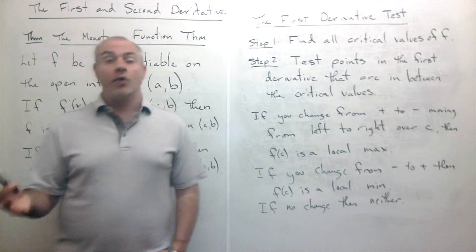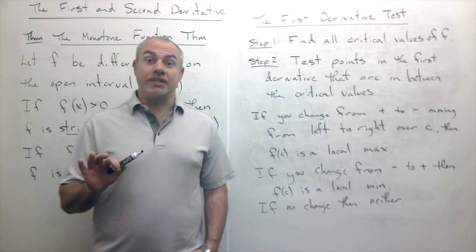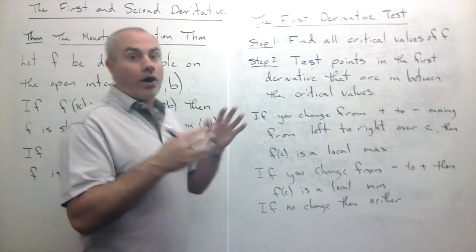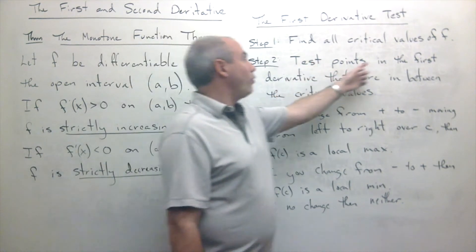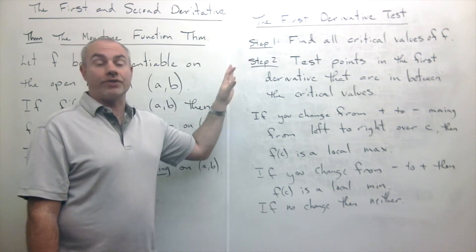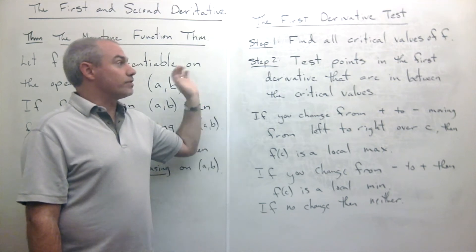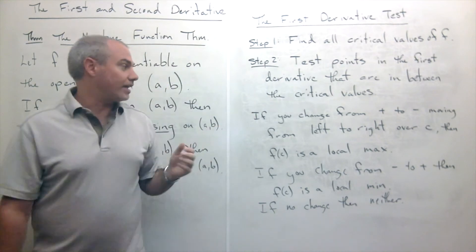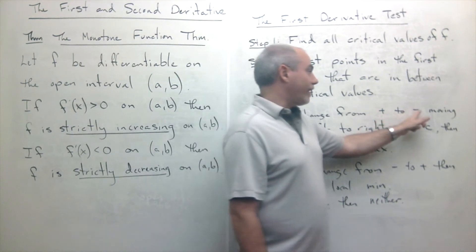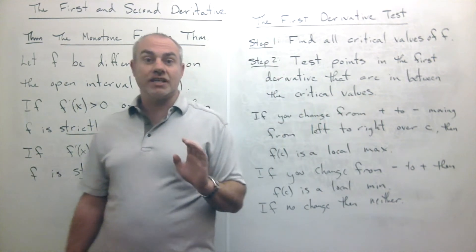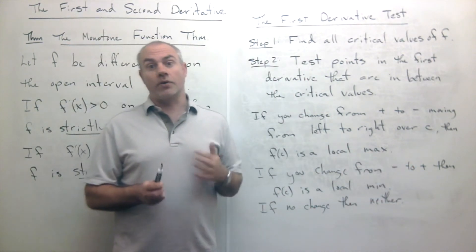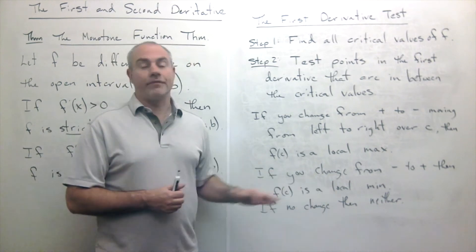Once you've done that, you make a number line, put all of your critical values on it, and then test points in between your critical values to see if you get positive or negative values. If moving from left to right you move from a positive derivative value to a negative derivative value when you pass over a critical value c, that gives you a local maximum. If you go from negative to positive, it gives you a local minimum. If there's no change in sign, then you don't have a local min or max.